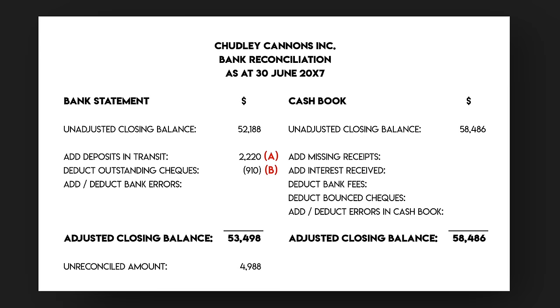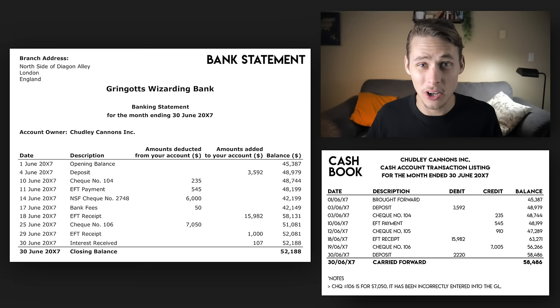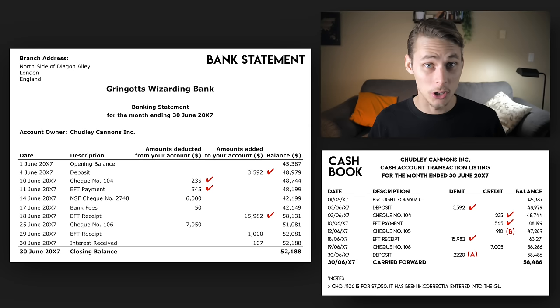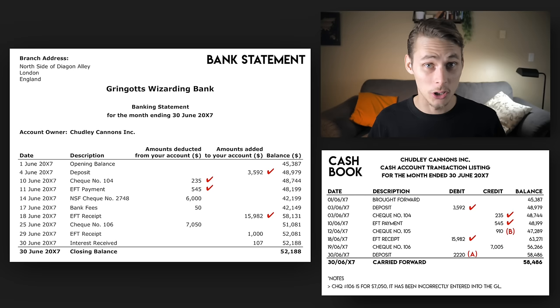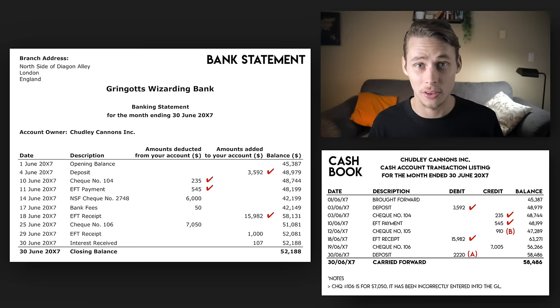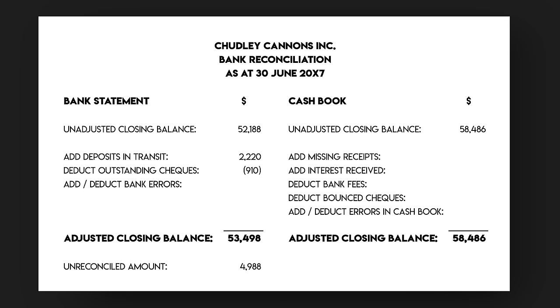The final adjustment on the bank statement side would be any bank errors. We don't appear to have any here, and more often than not that's the case. If you do come across any, identify the adjustment and contact the bank so they can fix the error as soon as possible. Now that we've worked out the adjusted closing bank balance, we can see the true cash balance of the business is $53,498 — that's the cash balance after all outstanding cheques and deposits have cleared the bank.